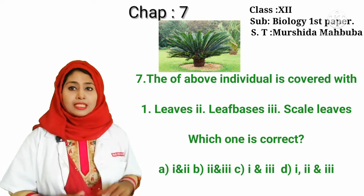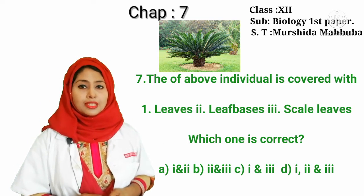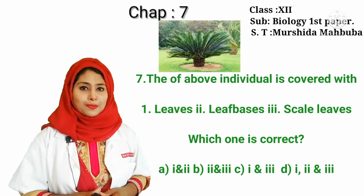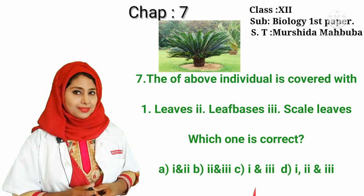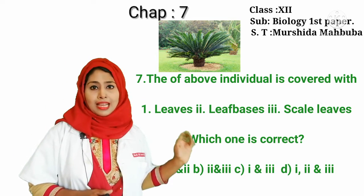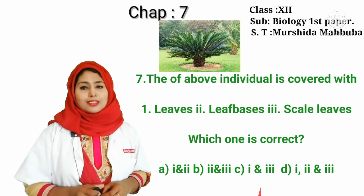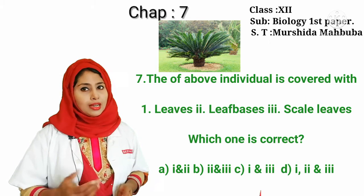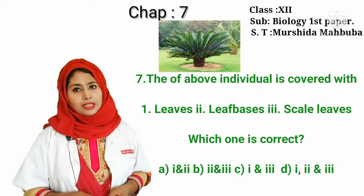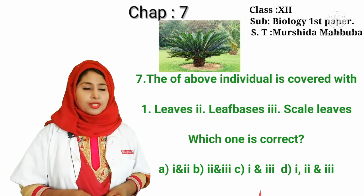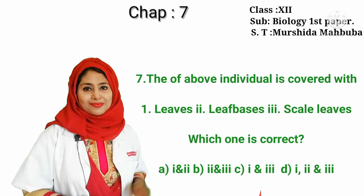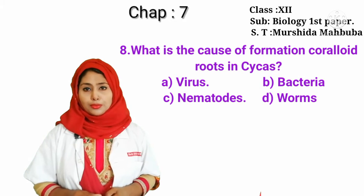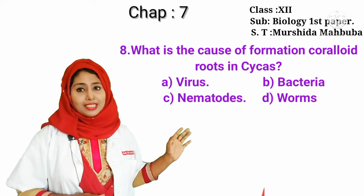The next question: the above individual is covered with leaves, leaf bases, and scale leaves — which one is correct? This individual is a Cycas plant. In Cycas, there are leaves, scale leaves, and leaf bases, so the correct answer is D. Then: what is the cause of formation of coralloid roots in Cycas — virus, bacteria, or nematode worms? The correct answer is bacteria.